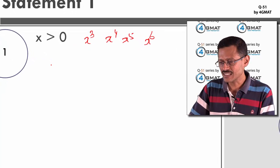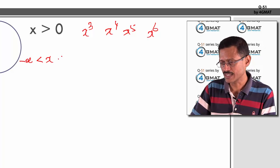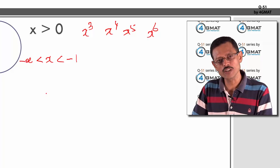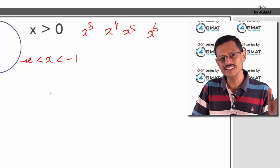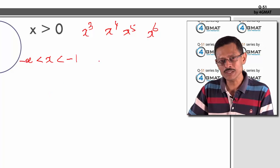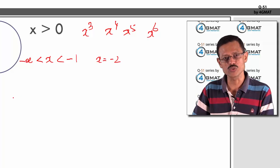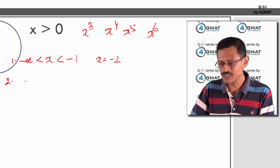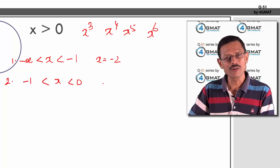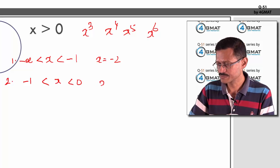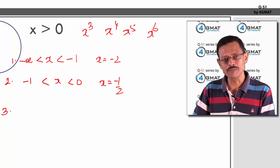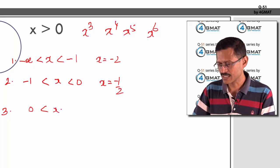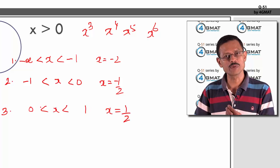The structured approach covers these intervals. First: x < −1 (negative numbers less than −1) — test with x = −2. Second: −1 < x < 0 (negative proper fractions) — test with x = −½. Third: 0 < x < 1 (positive proper fractions) — test with x = ½.